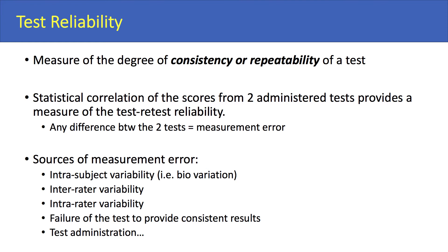An example of intra-subject variability would be if on day one I was tested and I ate breakfast before, but on day two I was tested and I didn't eat breakfast. That would be a form of intra-subject variability. There's also inter-rater variability — where I test differently than you for the same test. That would be a form of measurement error.